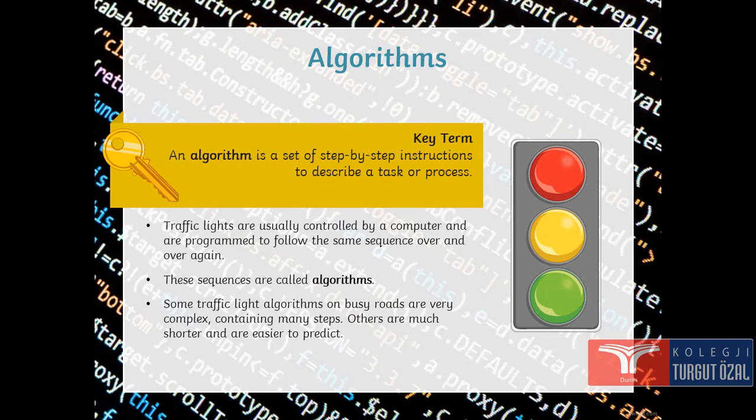Some traffic lights' algorithms on busy roads are very complex, containing many steps. Others are much shorter and are easier to predict.